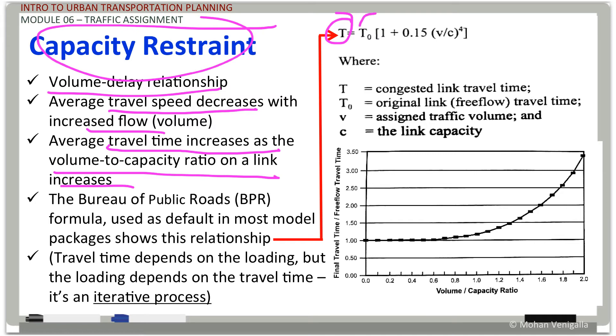They came up with this, a function formula. Travel time on a link is a function of free flow travel time and volume capacity ratio. So that is in its entirety. What you see here, ladies and gentlemen, this is your BPR function.